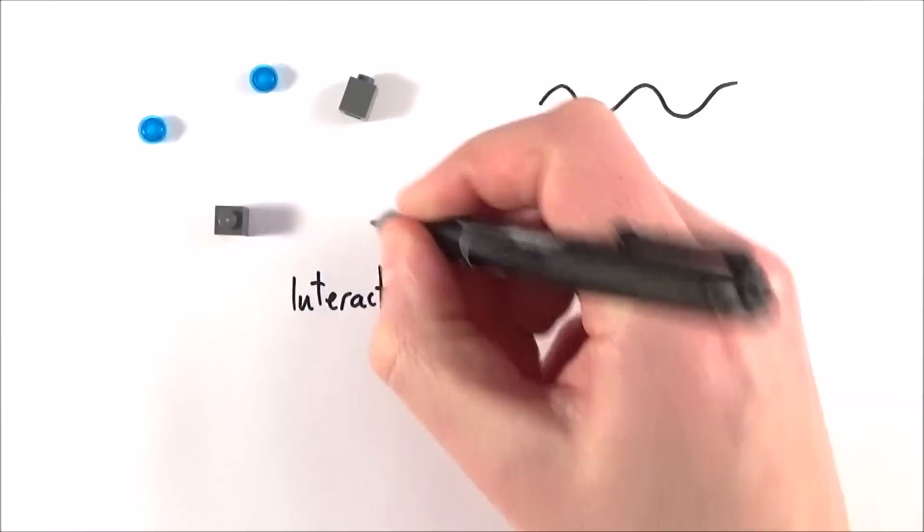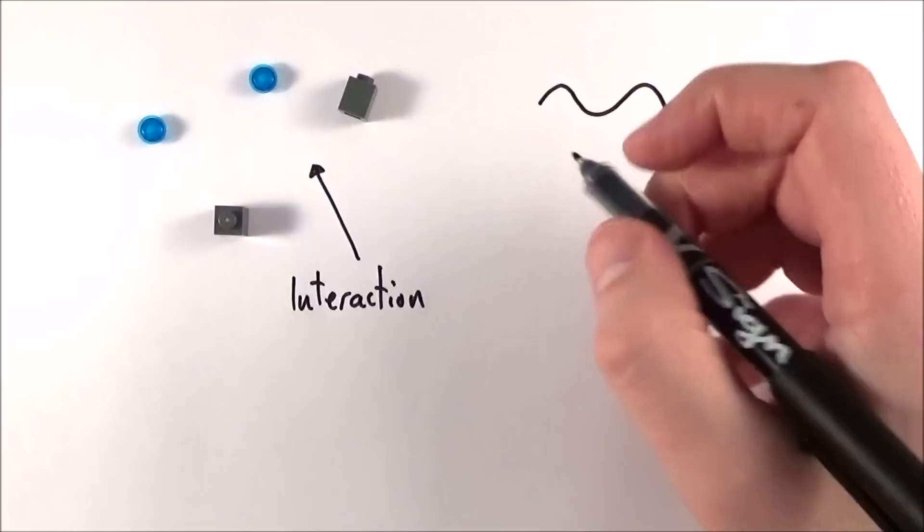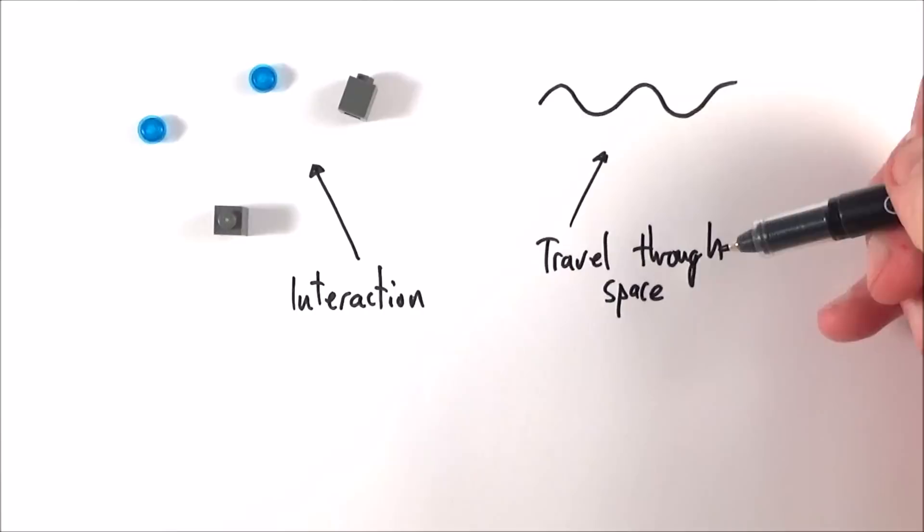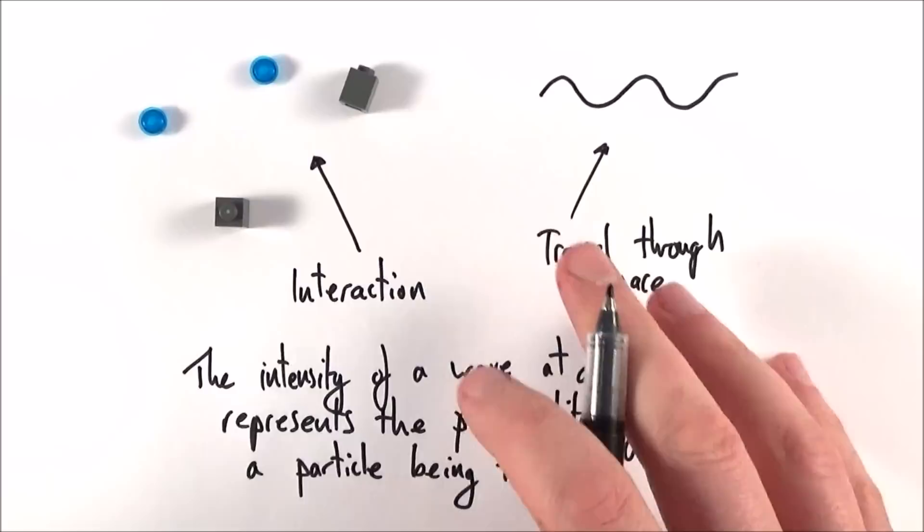But effectively we can maybe think about the interaction, perhaps, of electrons in terms of the particle model. So these electrons are attracted to positive plates. But when we think about the electrons traveling, this is where we maybe use the wave-like model. And it's because the electrons travel through space as a wave that we then see these electron diffraction patterns, which is something you can actually see in the lab yourself.